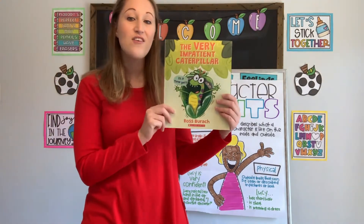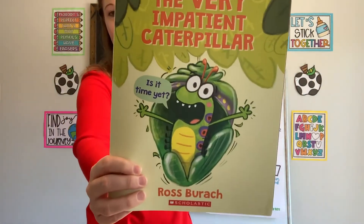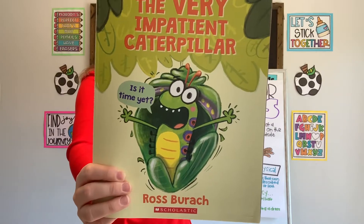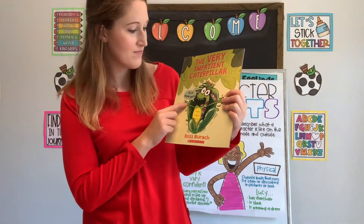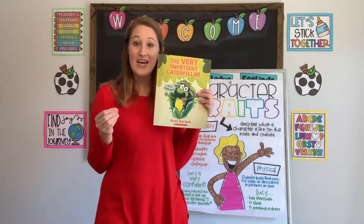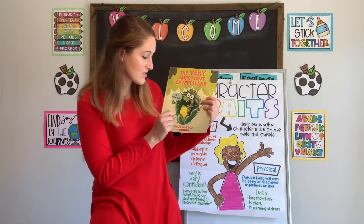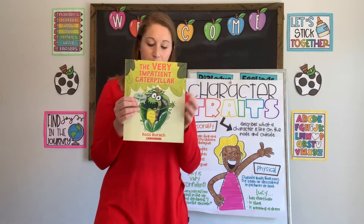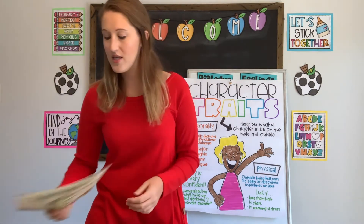Here's the first one: The Very Impatient Caterpillar. Take a look at the caterpillar. What physical traits do we see? If I'm looking at him, he's small — he's a caterpillar, he's a bug. I can describe his size, his color — he's green with purple and orange polka dots, and he's got a yellow belly. Those are things I can see and describe physically.